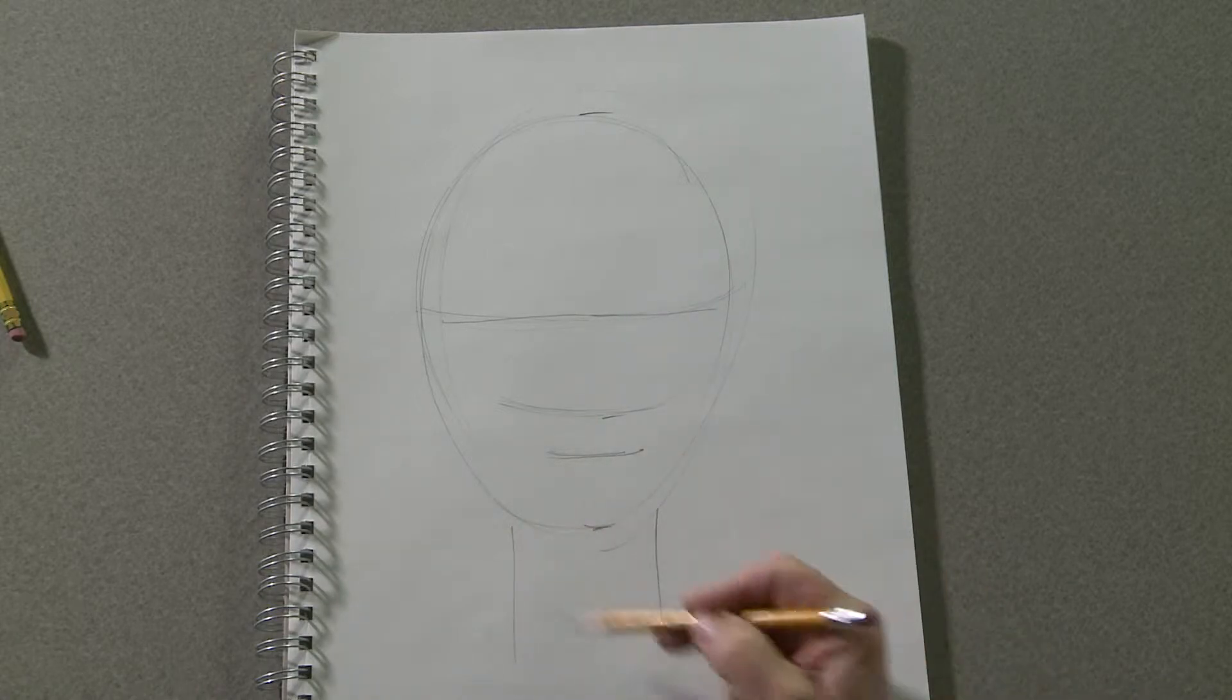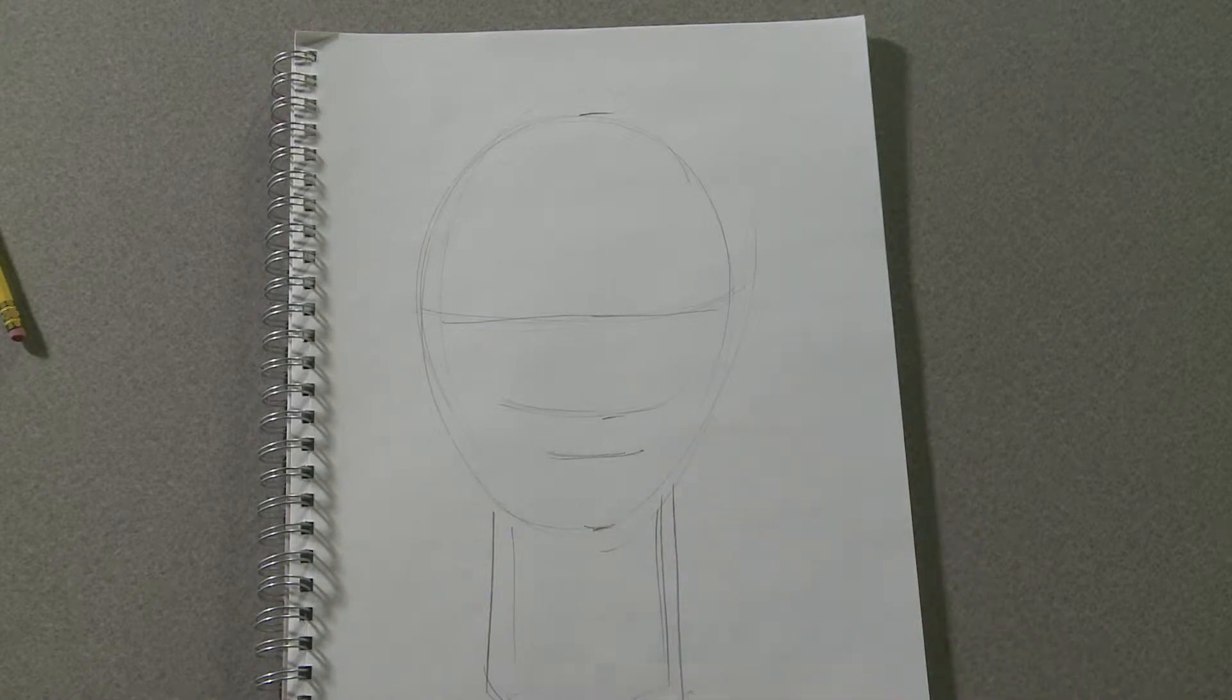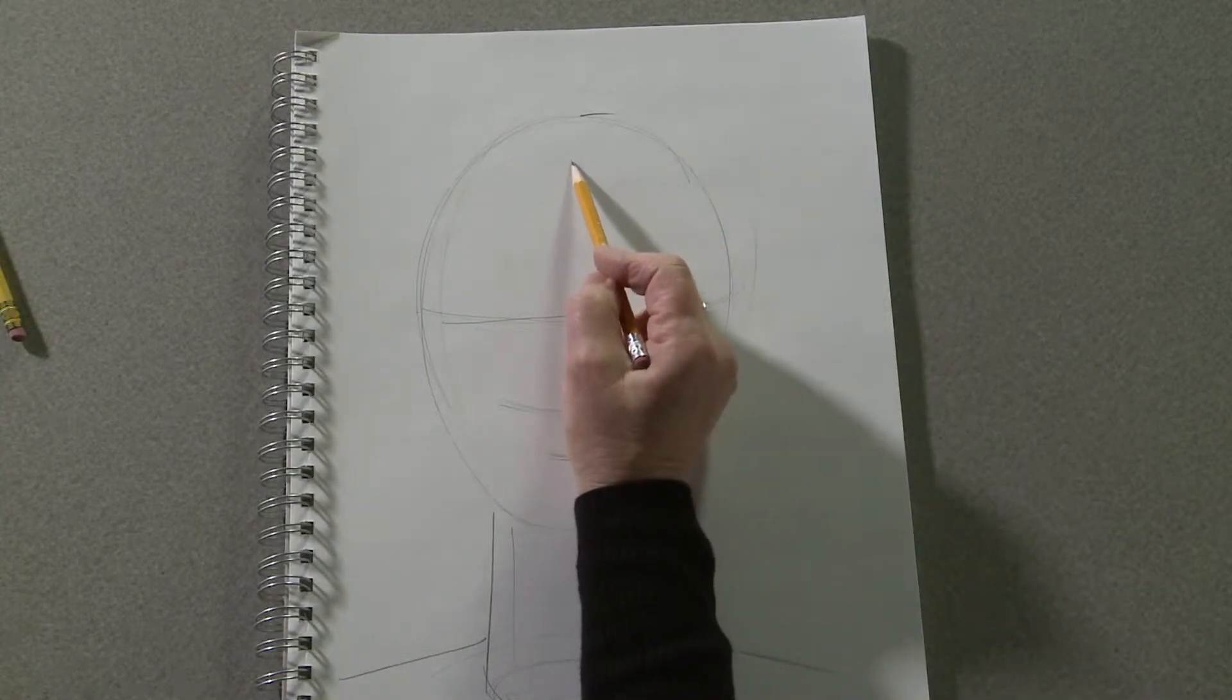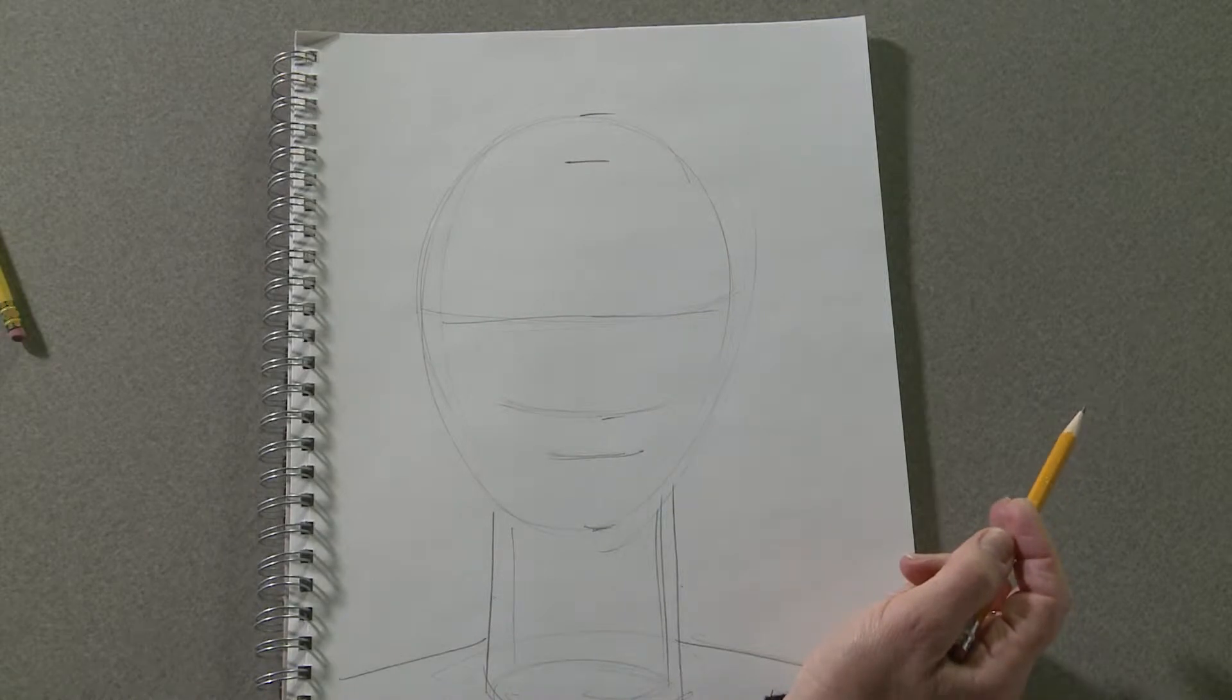Draw a soup can roughly three and a half by three, so three and a half long by three wide, and indicate the shoulders. Come down about an inch from the top of the head and draw a line to indicate the hairline.